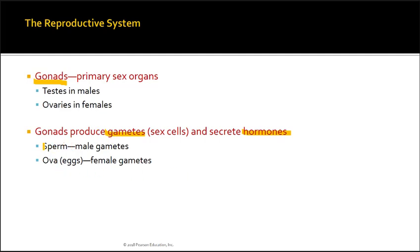The gametes in males are referred to as sperm, and in females are referred to as the ova, or as you would know it, called the egg.